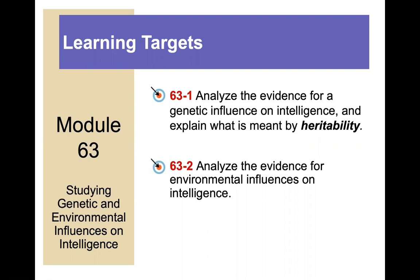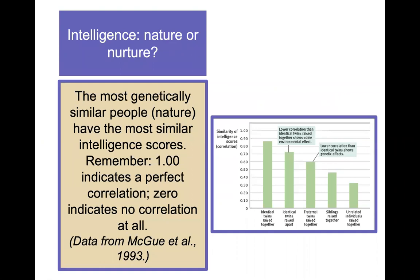We're revisiting that whole question of nature versus nurture in terms of intelligence. The most genetically similar people — those that share the most genetically — have the most similar intelligence scores. Correlation ranges from a perfect negative correlation of negative one to a perfect positive correlation of one, where one indicates a perfect correlation and zero indicates no relationship. As you can see, identical twins have higher correlations of intelligence test scores, which lets us know that there is some sort of genetic component.